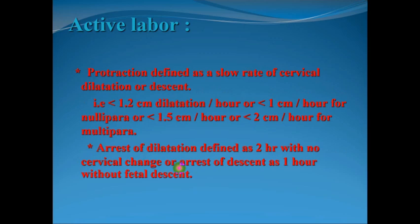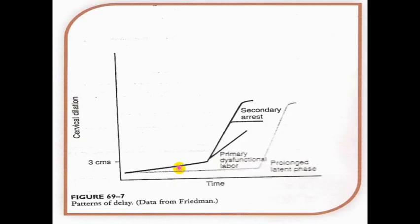The normal rate of cervical dilatation is more than one centimeter per hour in nulliparous patients and more than 1.5 to 2 centimeters per hour in multiparous patients. If the rate falls below one to 1.2 centimeters per hour in nulliparous, or below 1.5 to 2 centimeters per hour in multiparous patients, it is primary dysfunctional labor. Arrest of cervical dilatation is defined as no cervical dilatation for more than two hours.